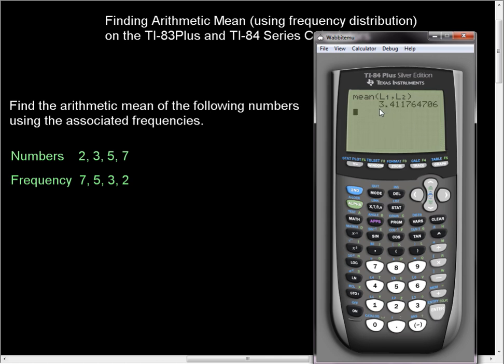Press enter. And now, what this does is it gives you the average using those frequencies. And now you'll notice that 2 and 3 happen more often than 5 and 7, so we should expect something that's closer to 3. And we do. We have 3.4 and so on. And so we round this off to about 3.4. And that's how you do it with frequencies.